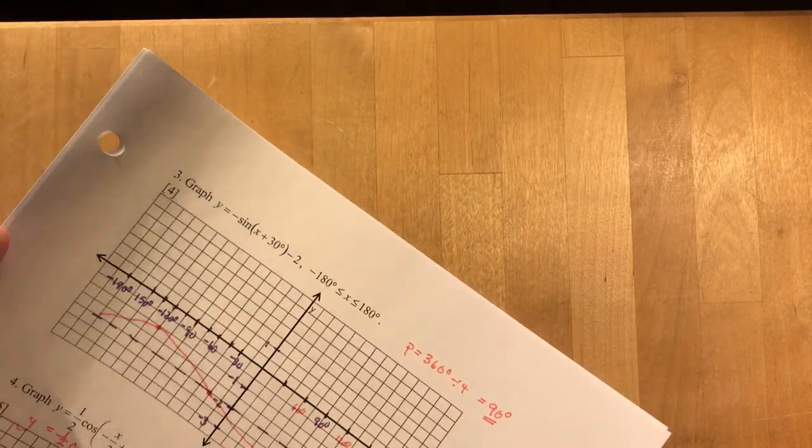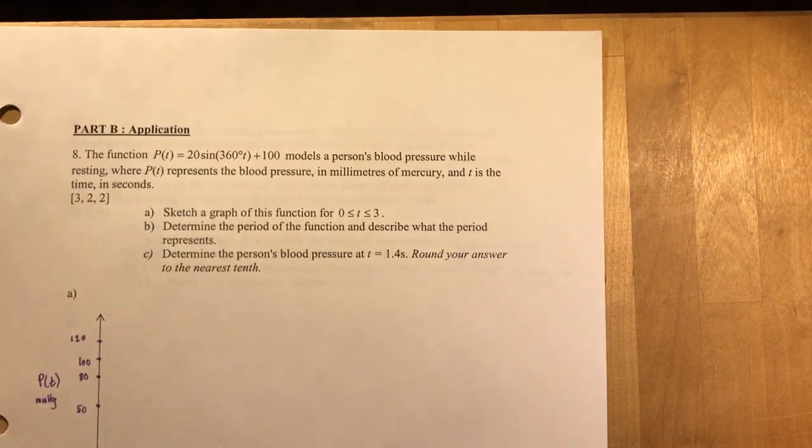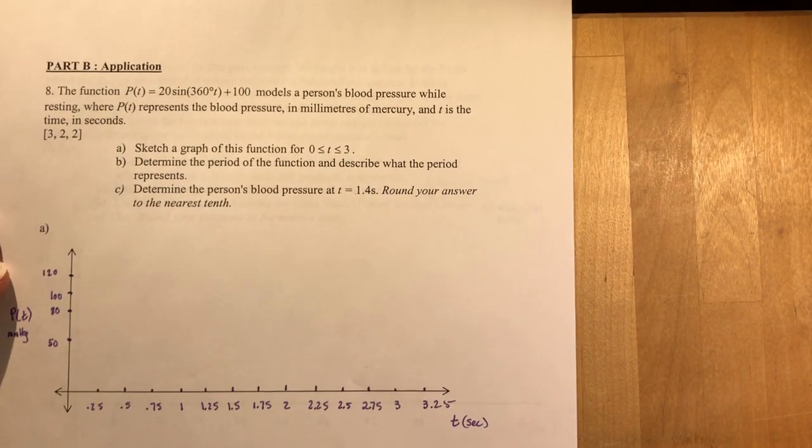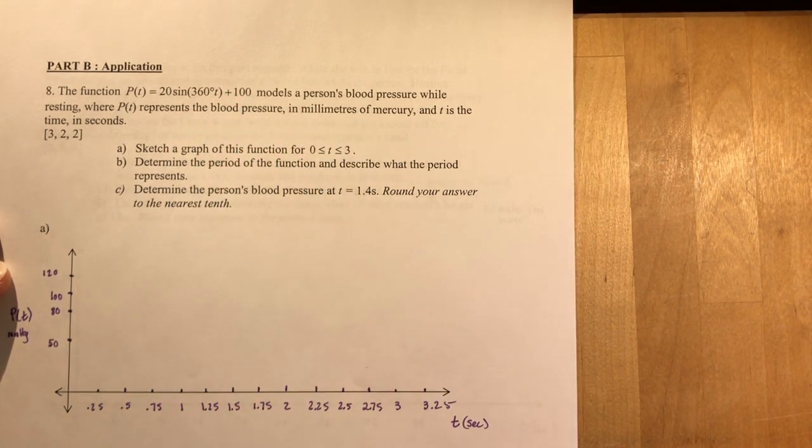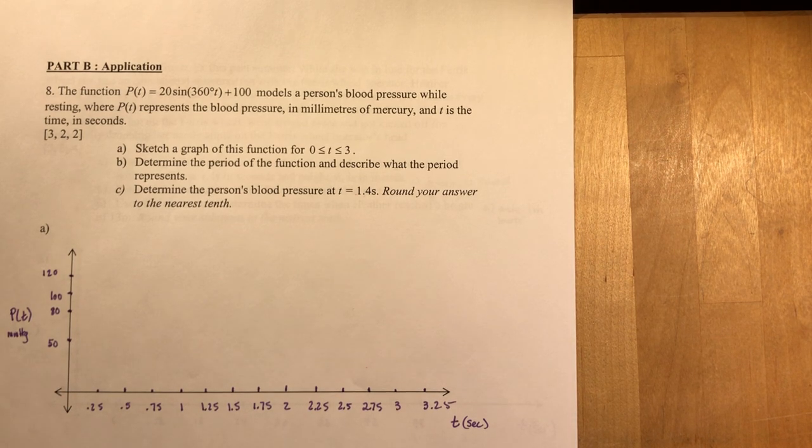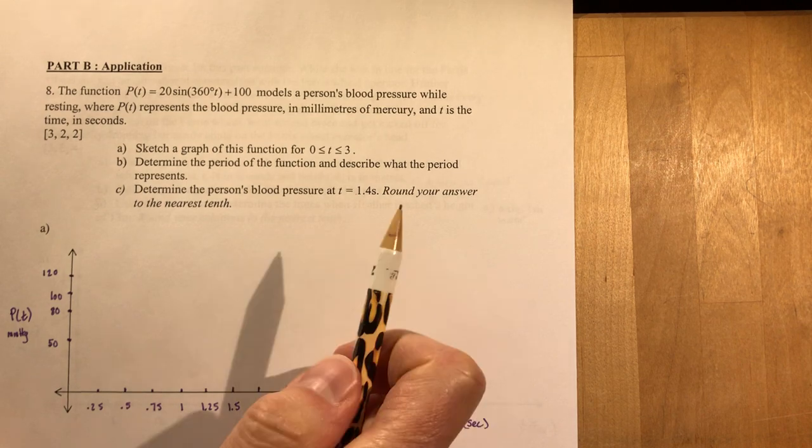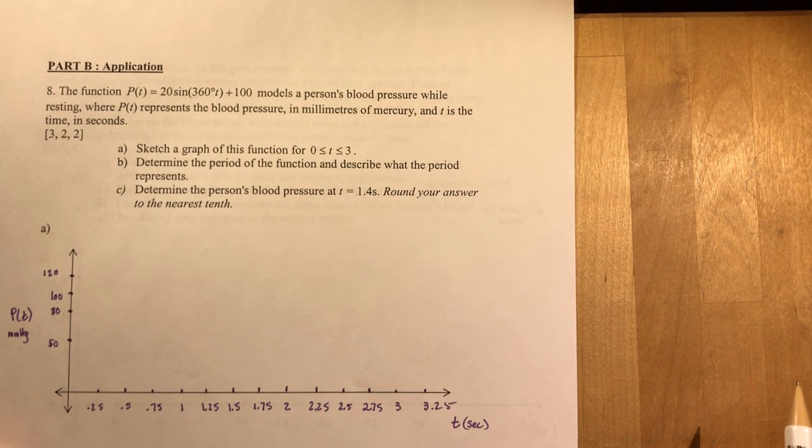Okay, now on to some applications, which I promised from the end of 6.7. A couple of trickier questions just to make sure that you've got these word problems straightened out. Function PT equals 20 sine 360 degrees T plus 100 models a person's blood pressure while resting where PT represents the blood pressure in millimeters of mercury and T is the time in seconds.